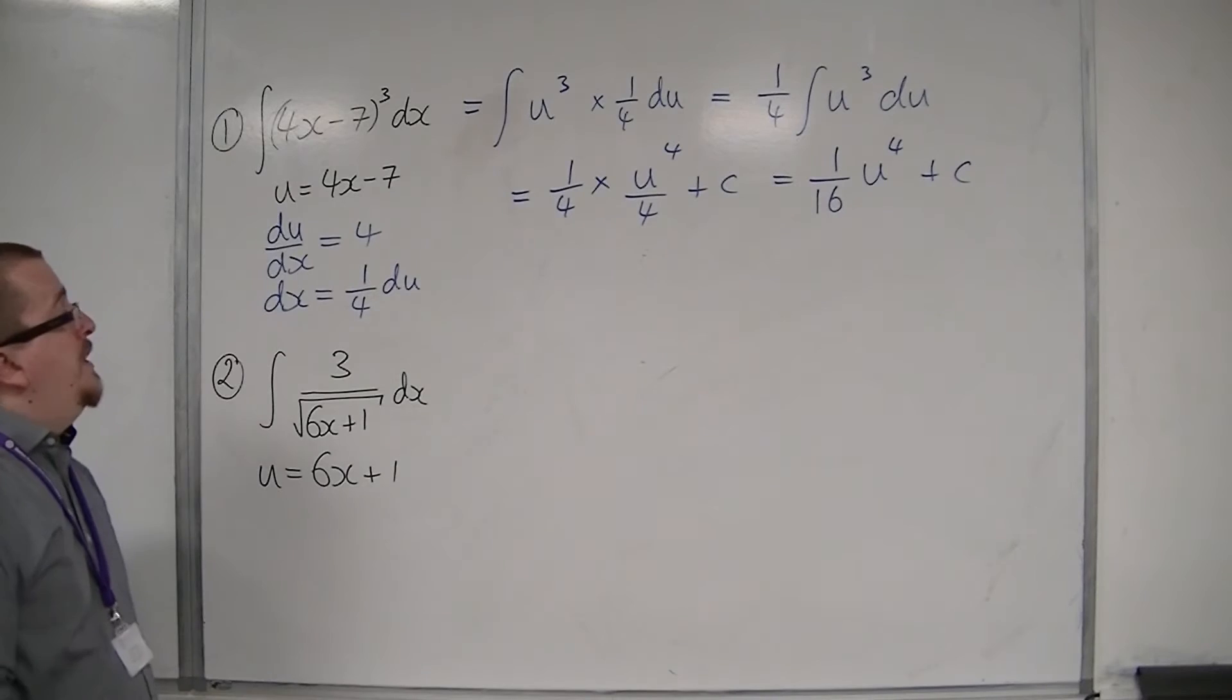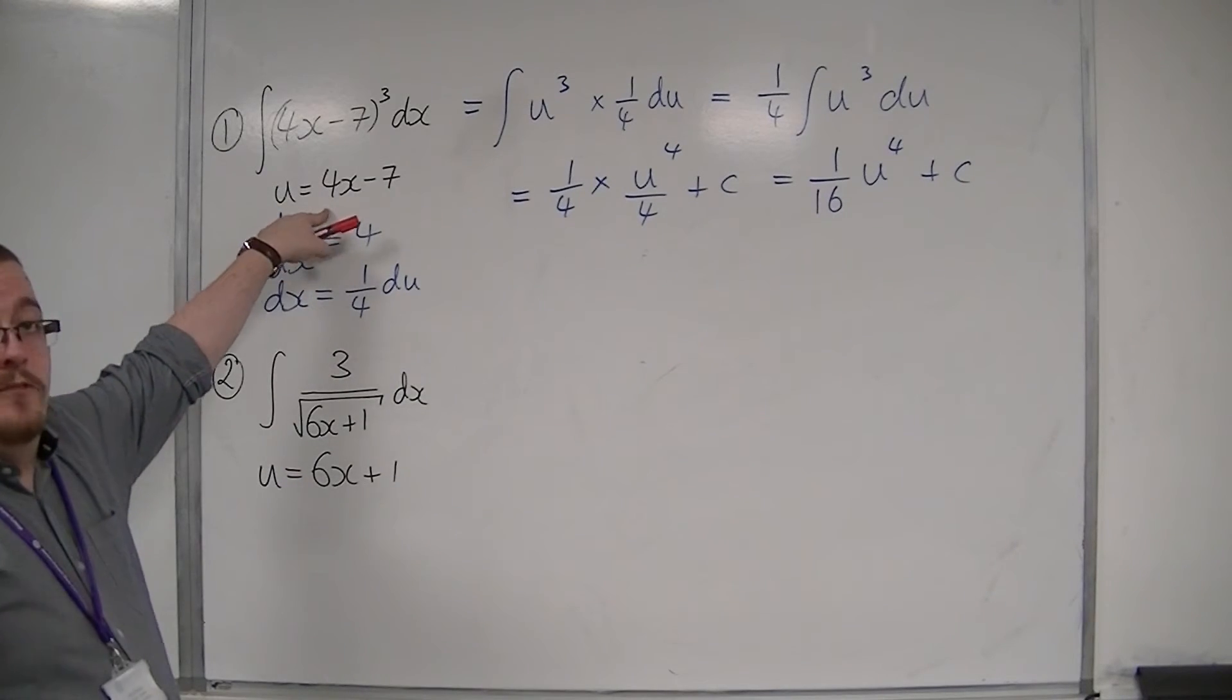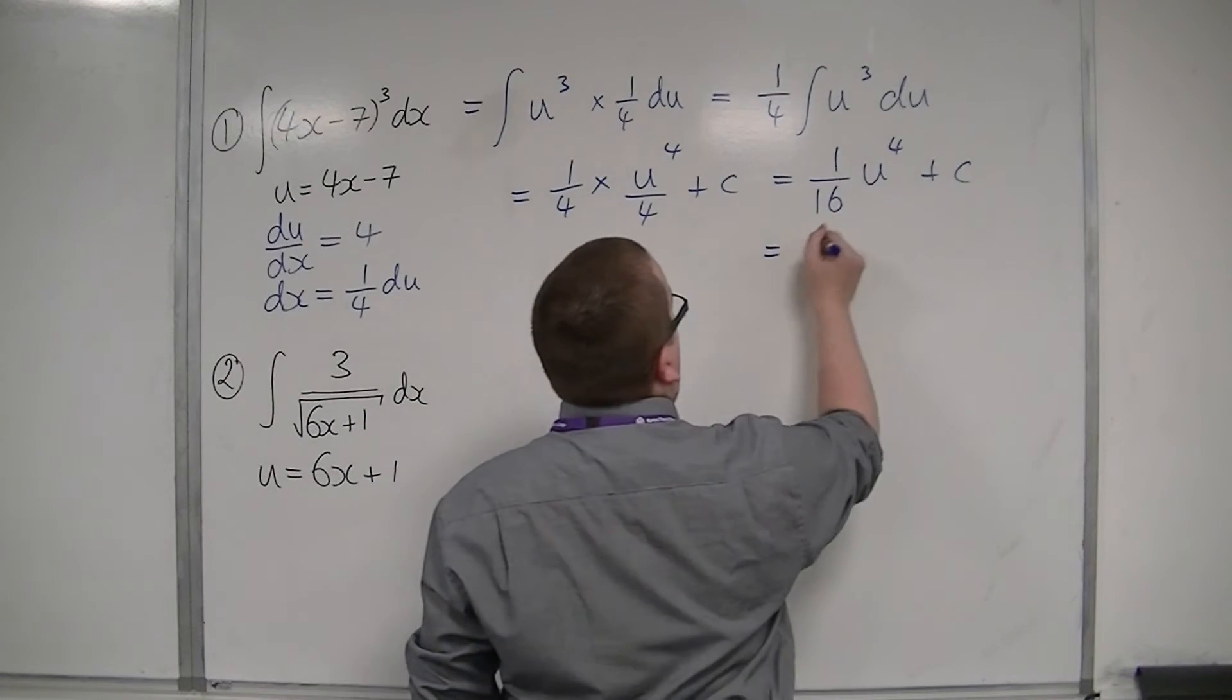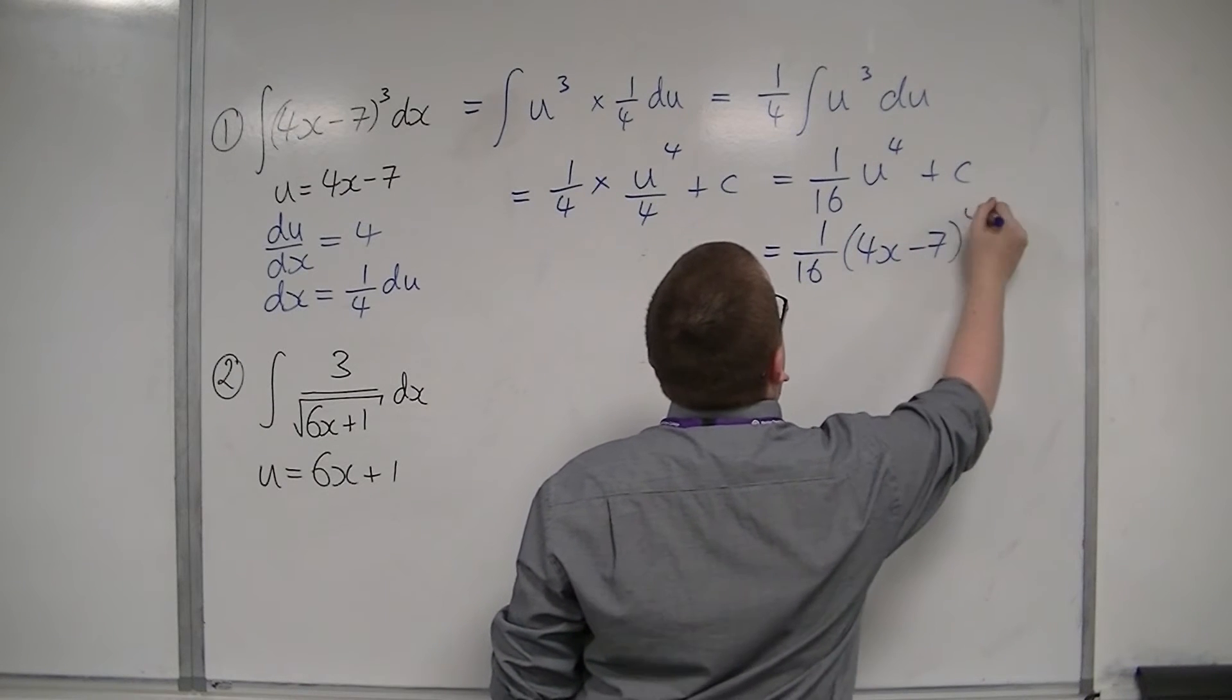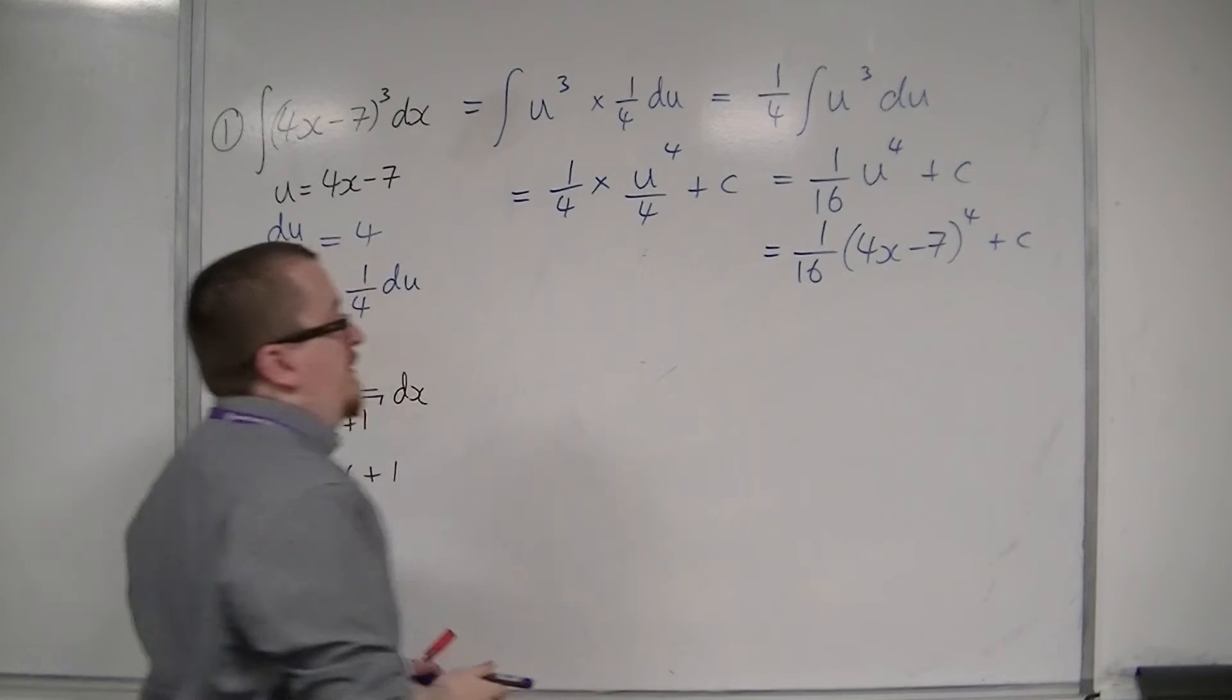Now I don't want to leave it in terms of u, and so I substitute back in the 4x minus 7. So 1 16th, 4x minus 7, to the power of 4, plus c. And that is my integral.